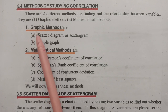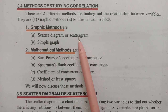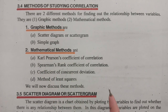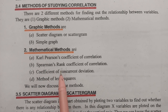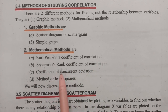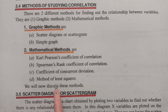Under graphical methods, the first one is the scatter diagram or scattergram, and the next one is the simple graph. Under mathematical methods, the methods for finding the correlation between two variables are: Karl Pearson's coefficient of correlation, Spearman's rank coefficient of correlation, coefficient of concurrent deviation, and the method of least squares.